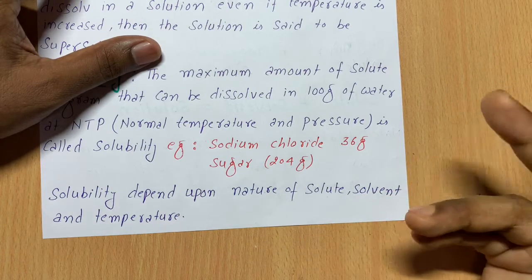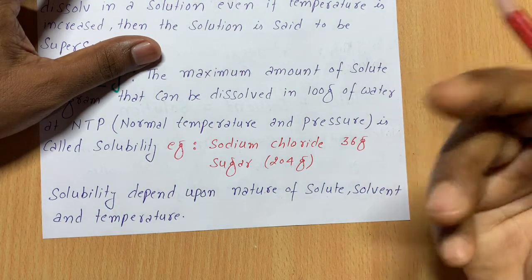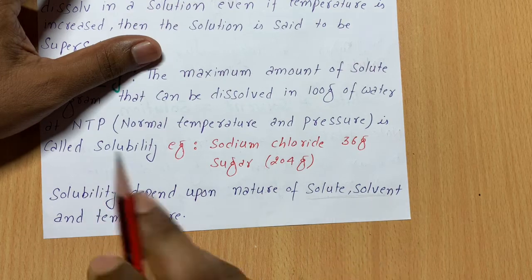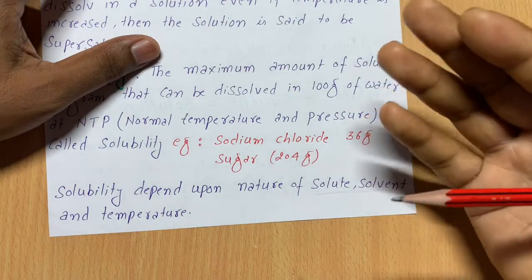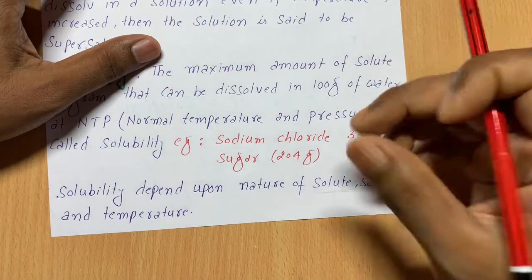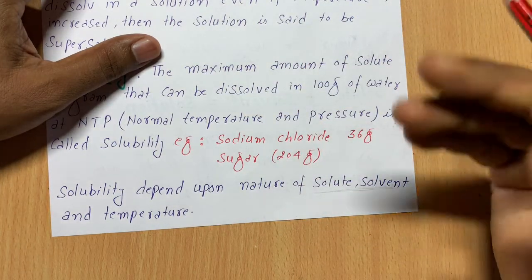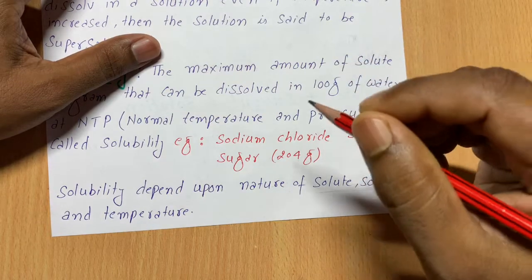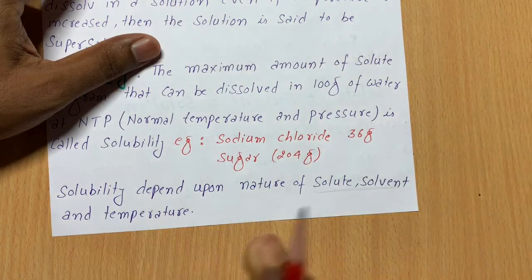Solubility depends on several factors: the nature of the solute and solvent is an important factor, and the third factor is temperature. In summer the room temperature is higher so solubility is higher, but in winter the temperature is lower so less dissolves. If you put sugar in hot water versus cold water, it dissolves much more easily in hot water — so solubility depends on temperature.